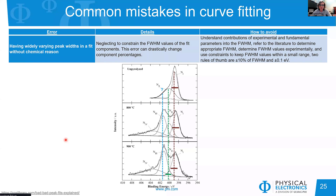The next quite common mistake found in the literature is using peaks of varying widths without justification. There are instances when you need different widths — for metal it's more narrow, for oxide it's broader. But here's an example of a nitrogen 1s spectrum for an organic compound undergoing some treatment: a peak fixed at some width was not properly constrained, and at a different temperature it's almost twice as large, while the other peak becomes very small. We are using these peak areas to extract quantitative information and trace chemical processes, so inconsistent FWHM will affect your component percentages.